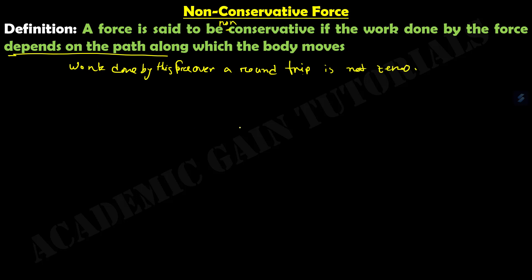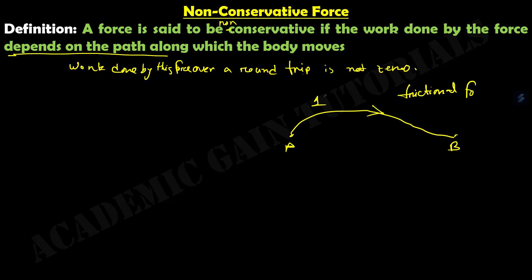Let us take an example. Here is point A and point B. An object is pushed from point A to point B along path 1, on a smooth horizontal floor. In this case, frictional force acts against the motion of the object. So work done is done against the frictional force.